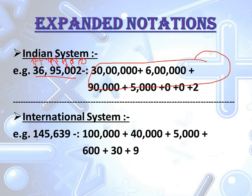We can do the same for the international system. In the international system, we assign place values: 1, 10, 100, 1,000, 10,000, 100,000. We write the expanded form depending on the place value of each particular digit. 1 is at the 100,000 place, so I write 100,000. Plus. 4 is at the 10,000 place, so I write 40,000. 5 is at the 1,000 place, so I write 5,000. Plus. 6 is at the 100 place, so I write 600. 3 is at the 10's place, so I write 30. 9 is at the 1's place, so I write 9.